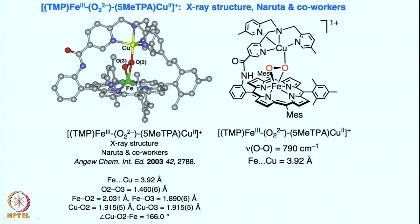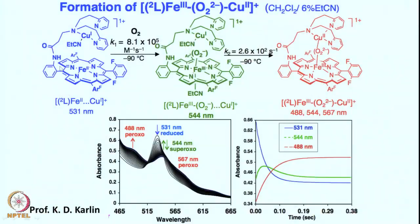In the next class we will continue, but do not forget this crystal structure — which is really priceless — where iron and copper are bridged by the peroxo as shown. We have seen the iron chemistry with tethering copper and will come back to this chemistry next class. Thank you, keep studying, we will see you soon.